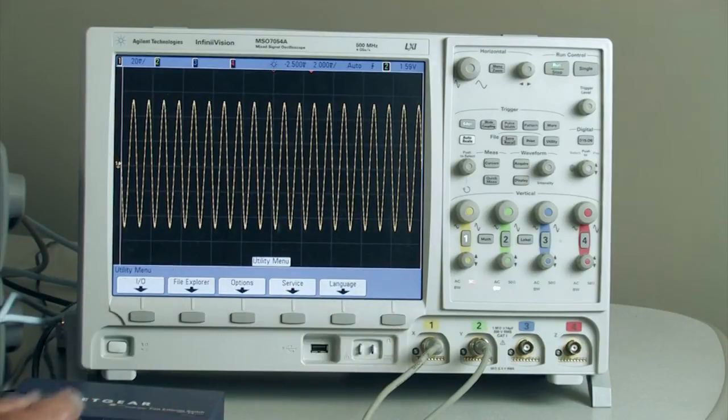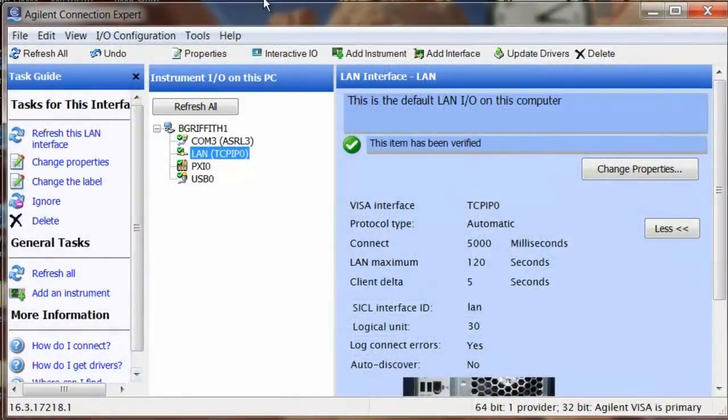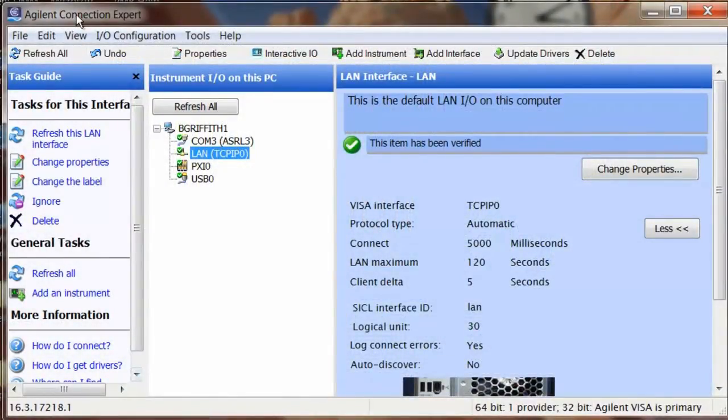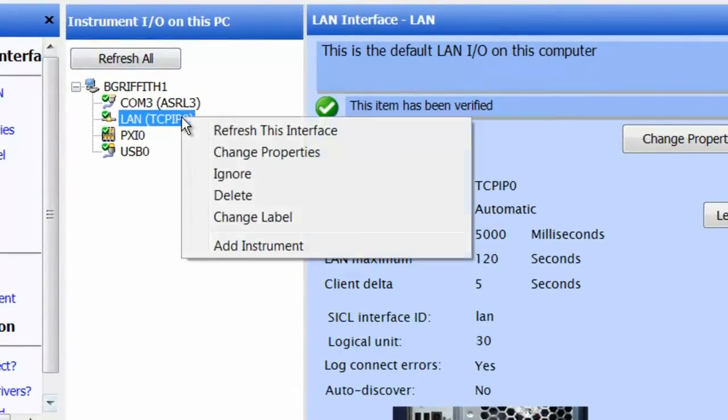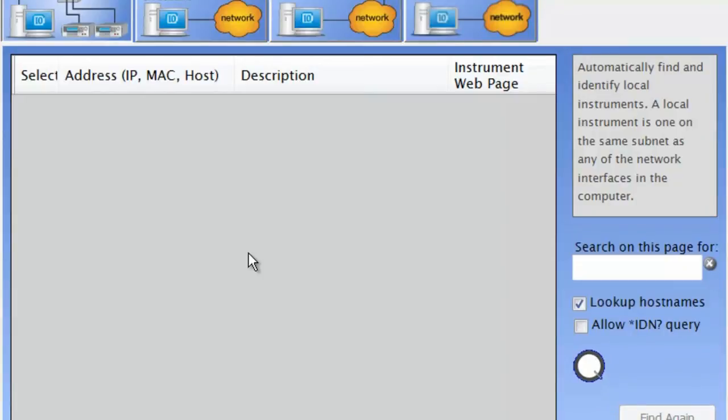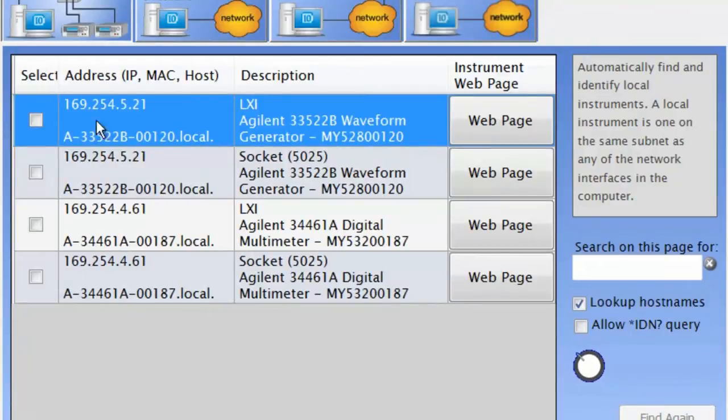Once we've reset all of our instruments, we can then go to the PC and we'll use the Agilent Connection Expert. And we'll go ahead and find each of our instruments on the LAN. So it's going out and discovering each of the instruments on the LAN interface. So it discovers the instrument and it also discovers the socket interface for each of the instruments as well.